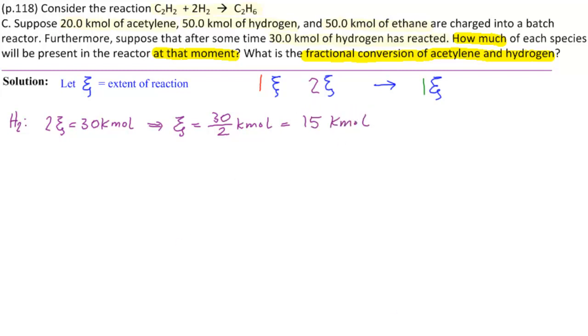And from that, we can see that 1ξ, that would be C2H2, and this is consumed, would be 1ξ equal to 15 kilomoles, and that's consumed also because it's on the left of the equation. And then the last one is we have ethane C2H6 is 1ξ equal to 15 kilomoles, and that is produced.